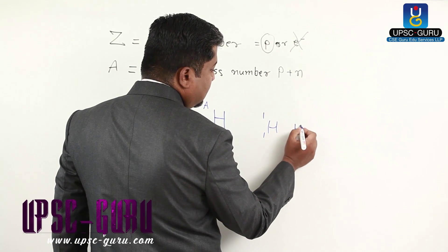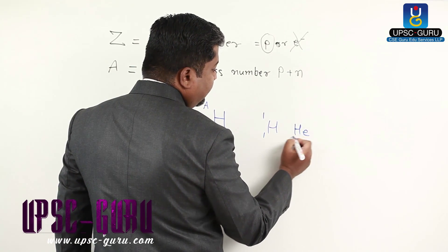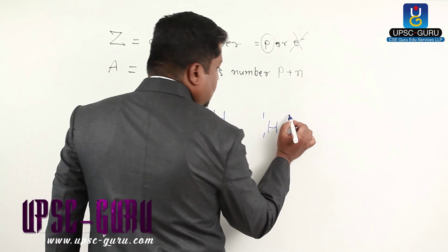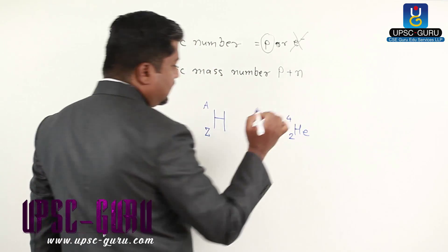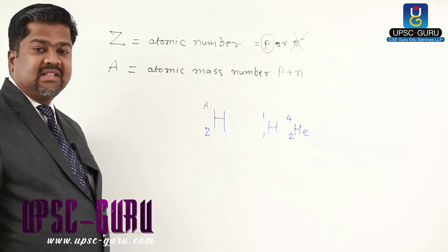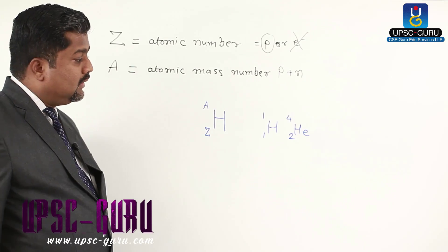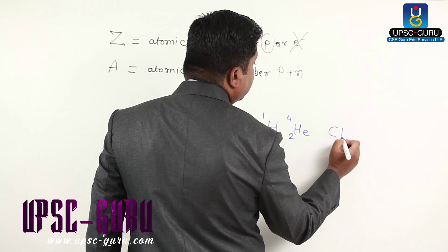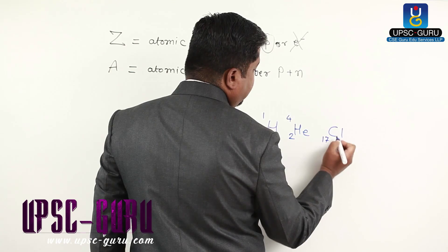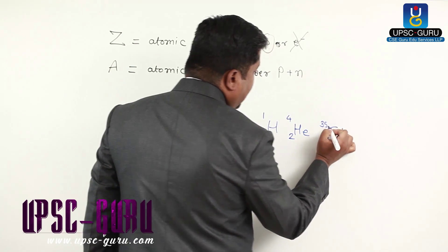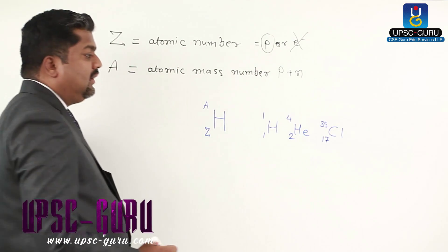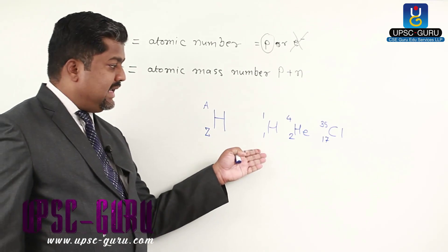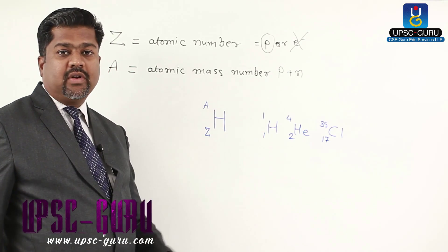For helium, there are two protons and two neutrons, so the mass number is four. Chlorine has 17 protons and a mass number of 35. This is the standard style of writing atomic number and mass number for an element.